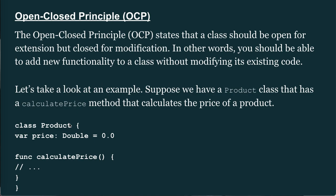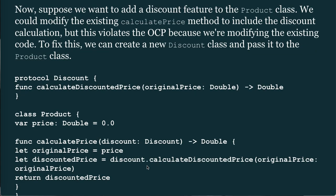For example, suppose we have a Product class with a calculatePrice method: class Product { var price: Double = 0.0; func calculatePrice() }. Now suppose we want to add a discount feature. We could modify the existing calculatePrice method to include the discount calculation, but this violates the OCP because we are modifying the existing code.